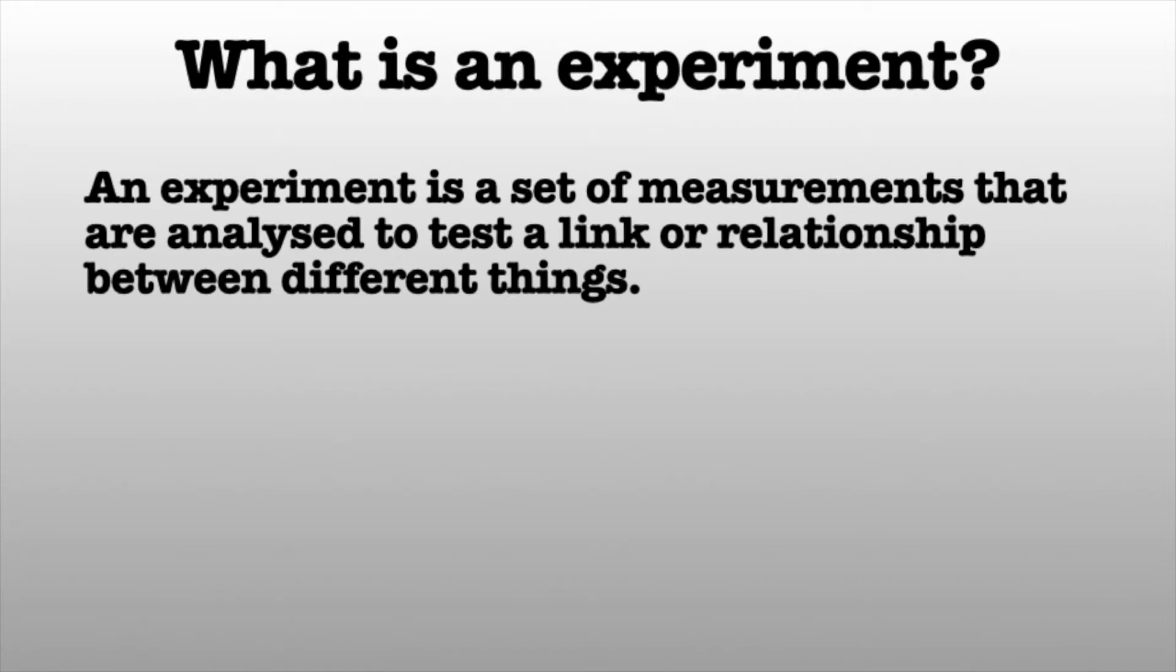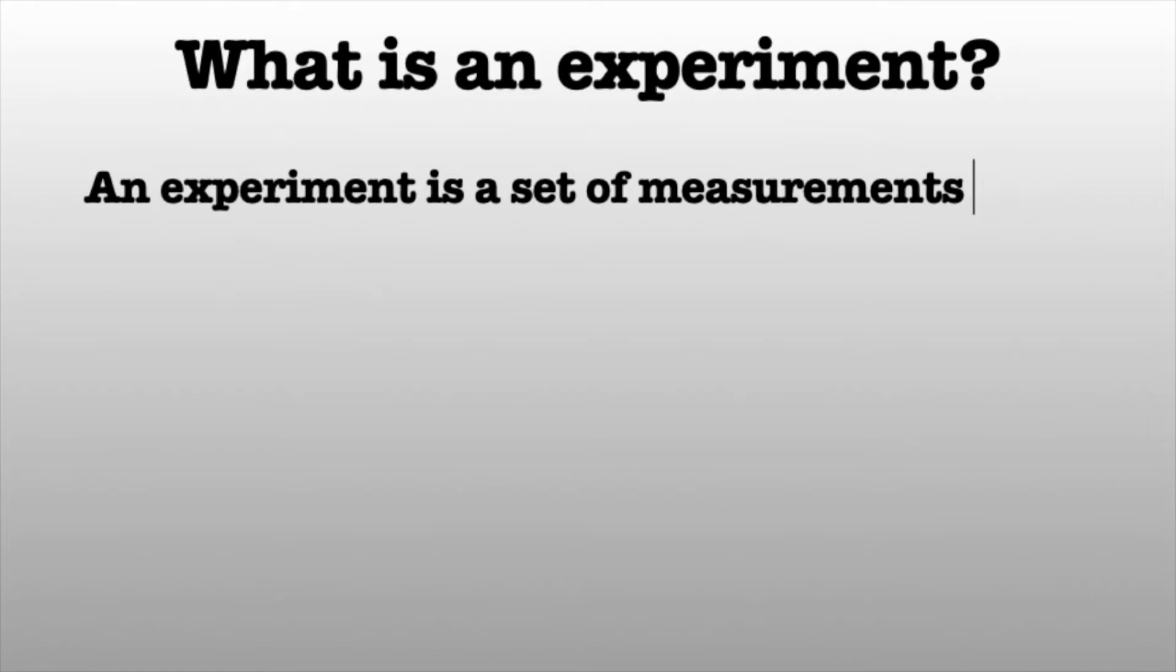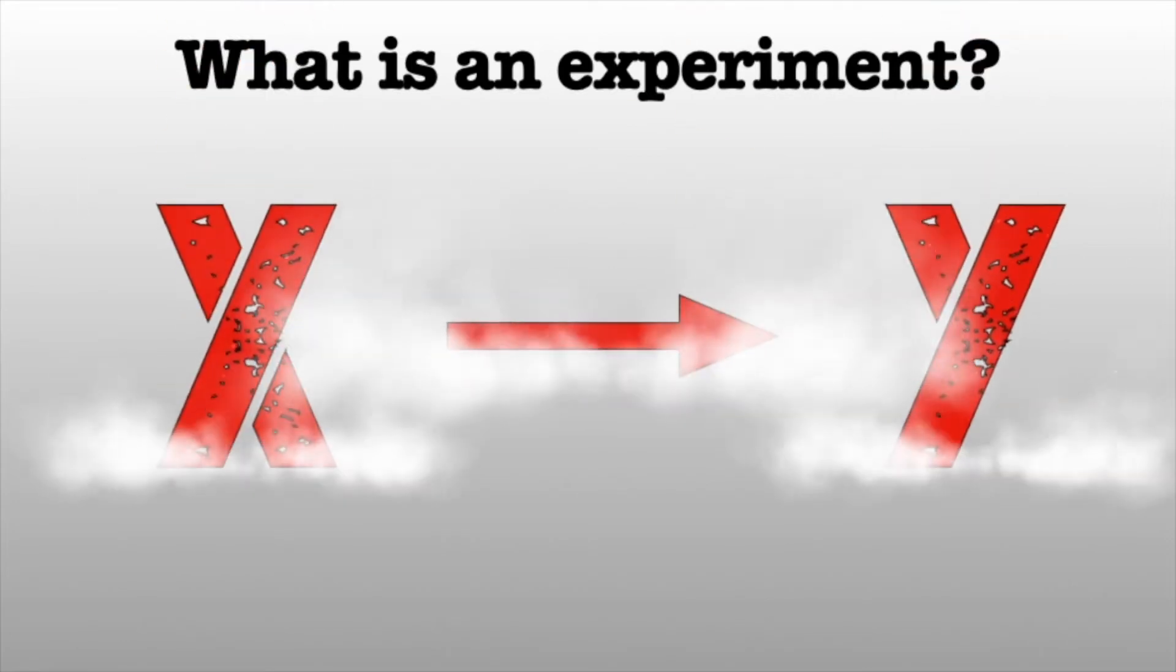If we were to put it in a different way, we could say that we have two variables or two factors, let's call them x and y, and there is a relationship between them. An experiment is going to test what happens if x is manipulated or changed and how is that going to affect y.